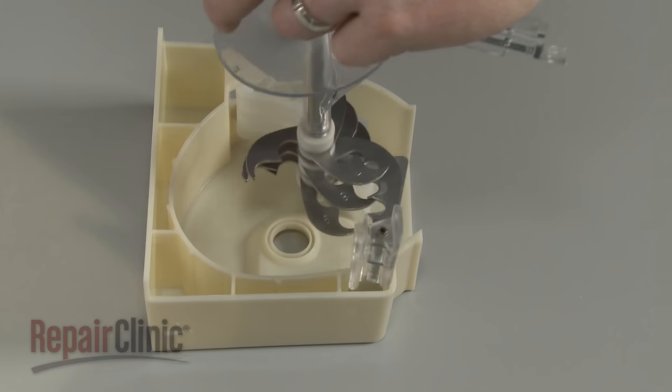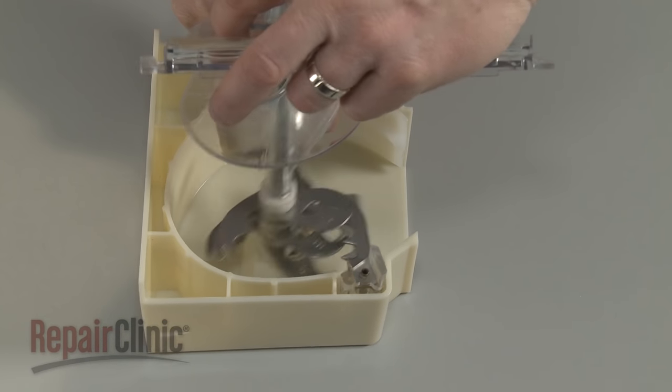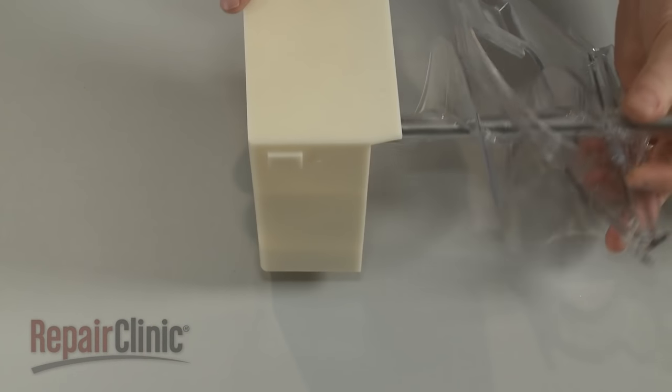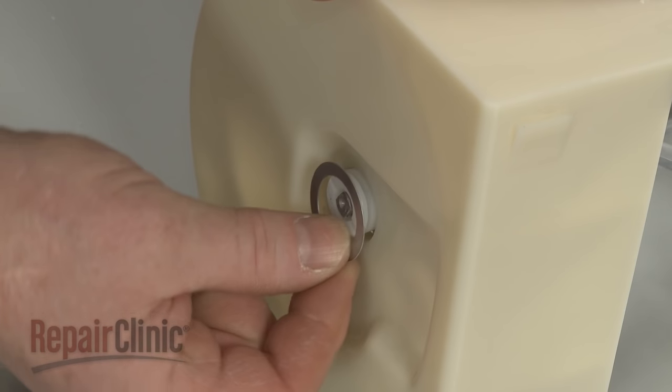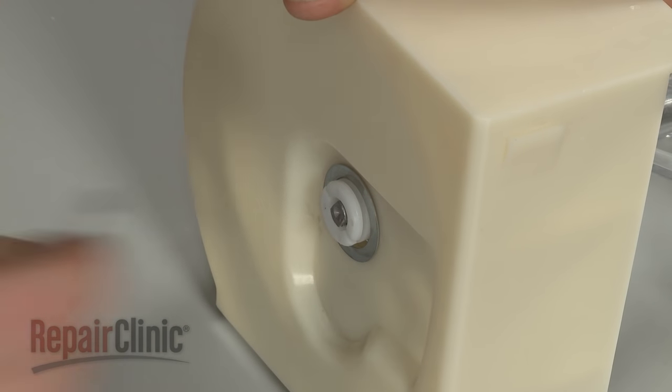Now properly align the auger assembly blades in the housing. Replace the washer and secure the E-clip.